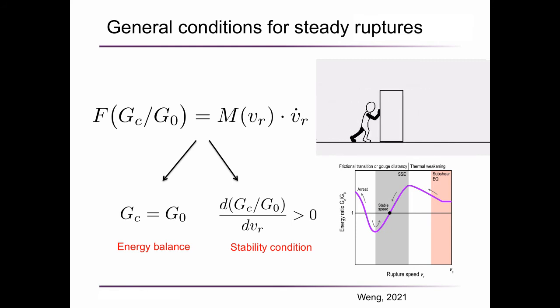But only this condition is insufficient. Suppose you are pushing a box on a slippery ground, you will find it impossible to move at a constant speed. So there should be another stability condition for a steady state. Actually, it requires the force term to be a decreasing function of the speed. For long ruptures, the energy ratio should be an increasing function of the rupture speed. In brief, this theory predicts these two critical conditions, the energy balance and the stability condition, that are presented on the right sketch.